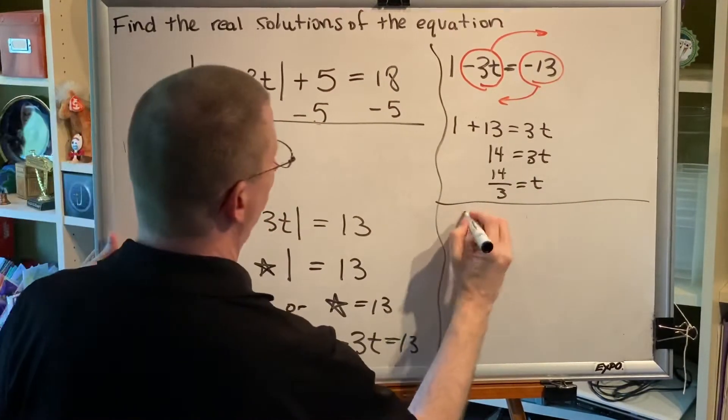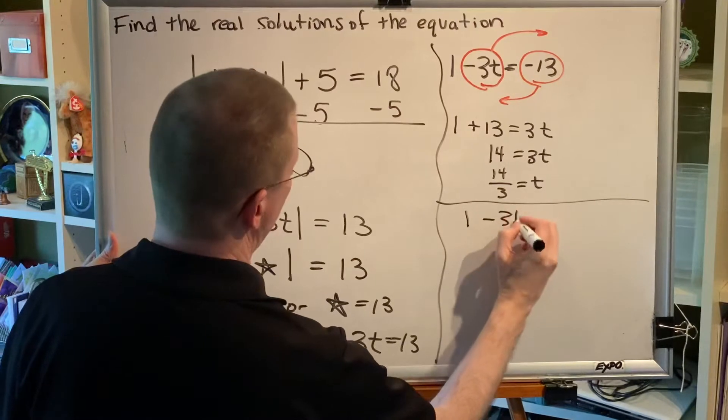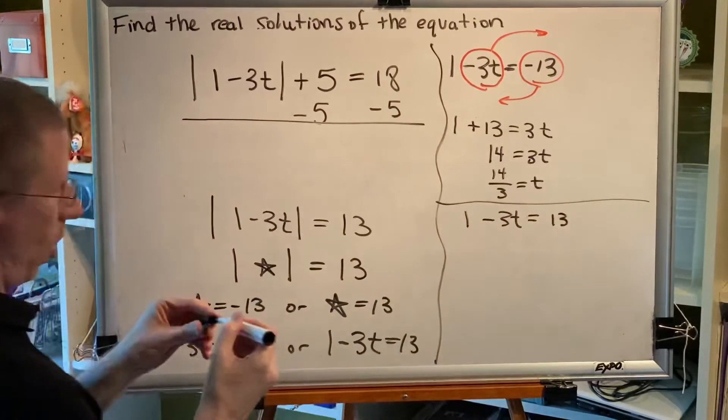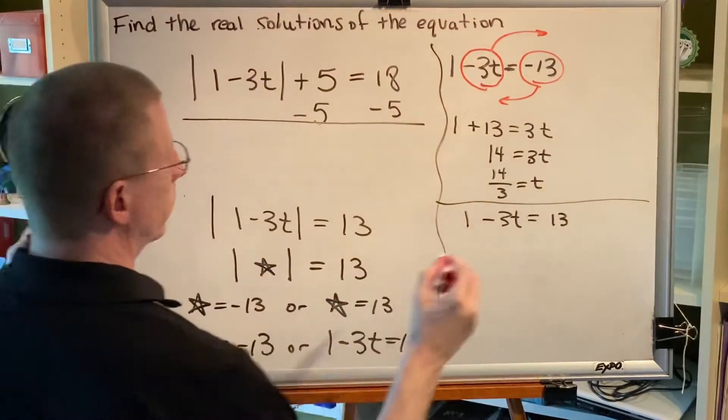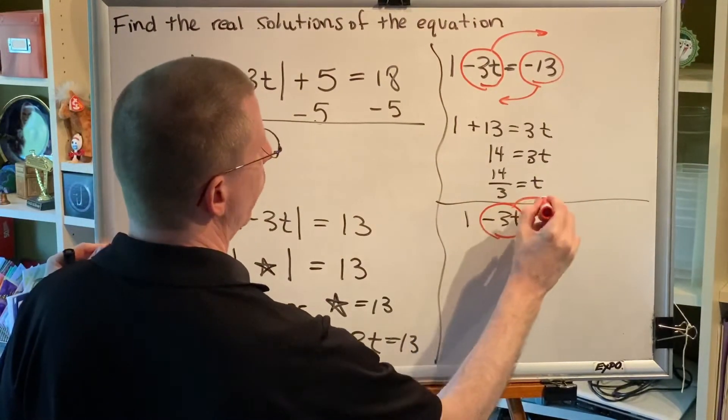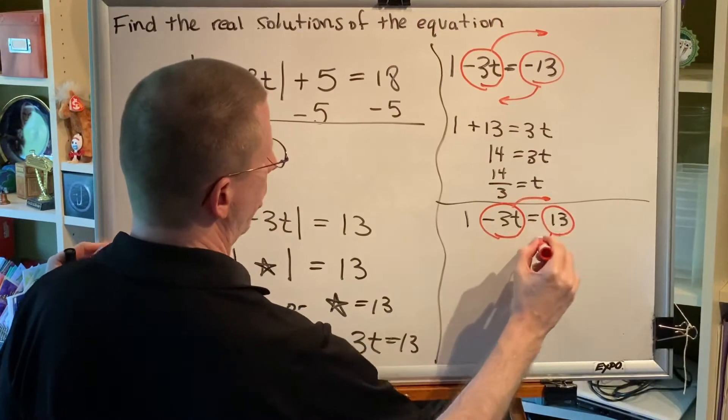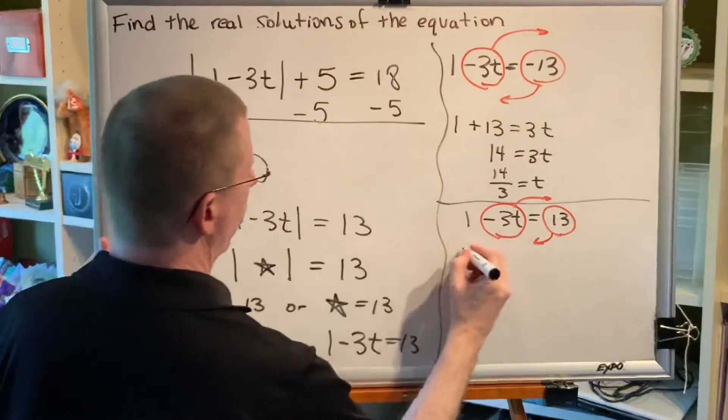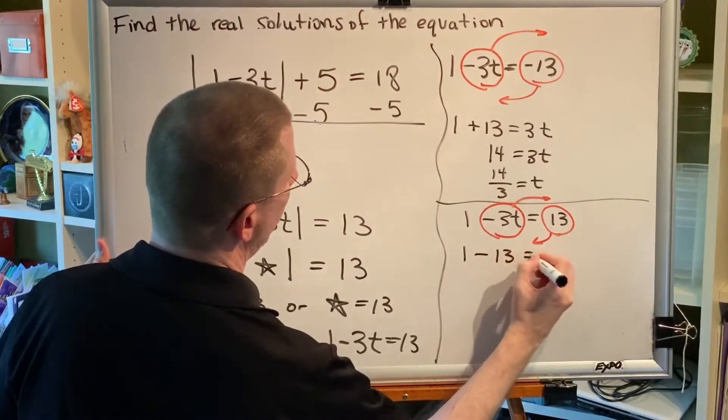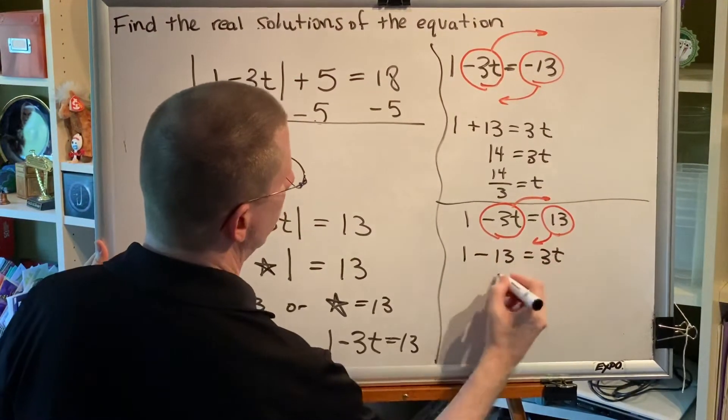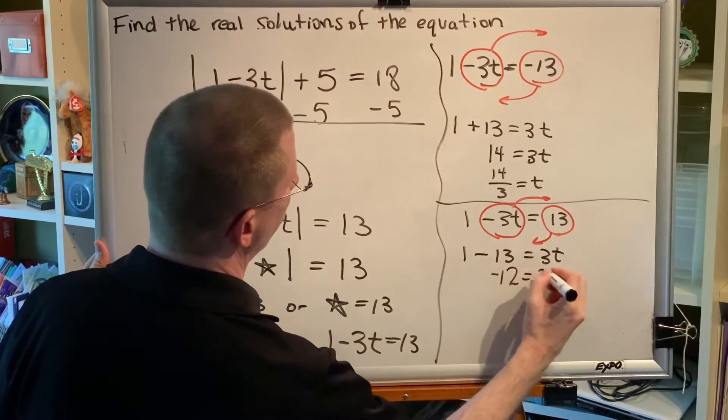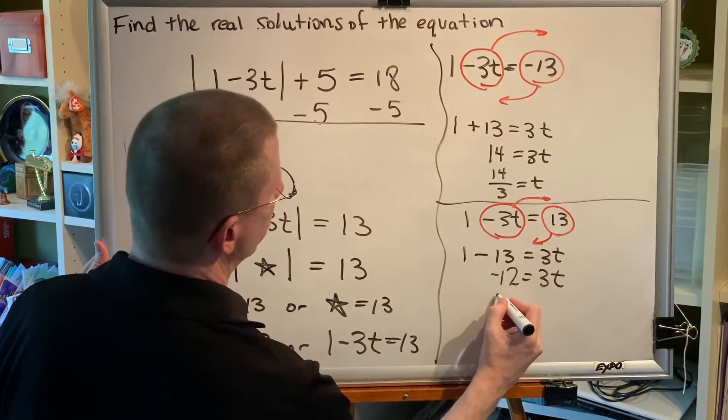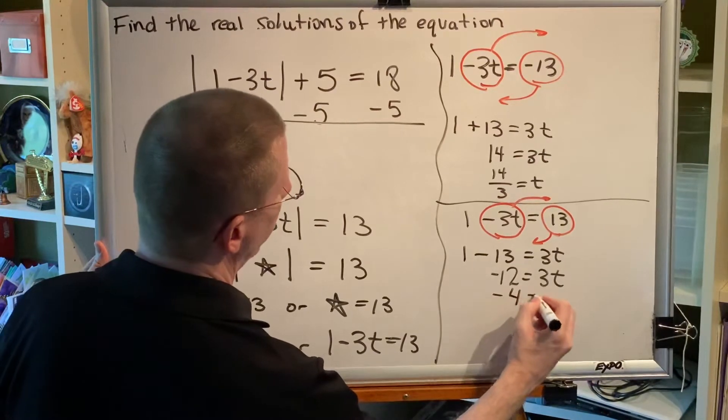The other equation, 1 minus 3t equals 13, can be solved using the same tactic. I will pick this term up and move it over here. And this term up and move it over here. So, I get 1 subtract 13 equals 3t. Negative 12 equals 3t. Dividing by 3 on both sides, I get negative 4 equals t.